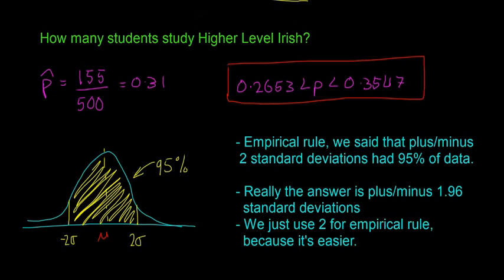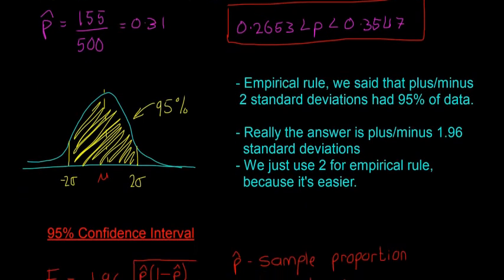But really the answer is, and you can check this in the log tables, the answer is plus or minus 1.96 standard deviations. That's if you're really exact. For the empirical rule using 2 is absolutely fine, but just for the confidence intervals we use 1.96 to be really exact. So that's the first thing.